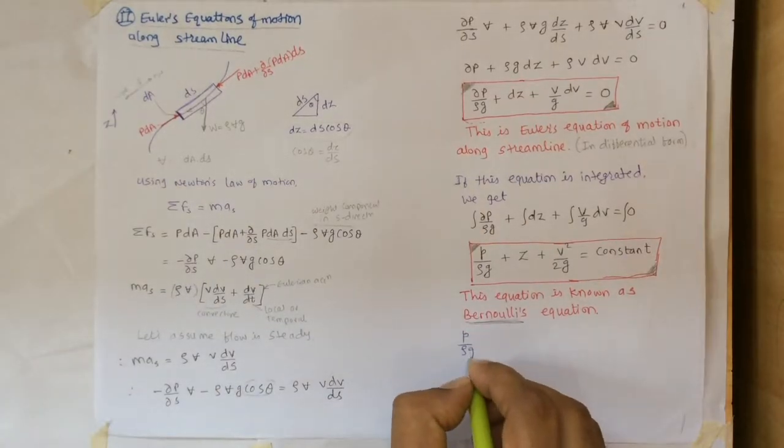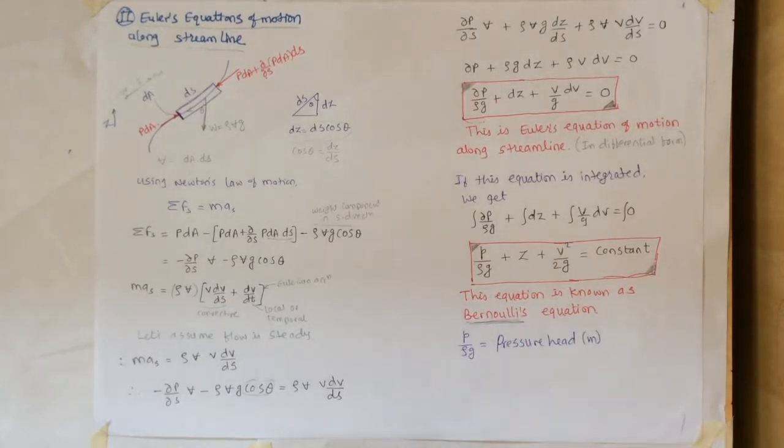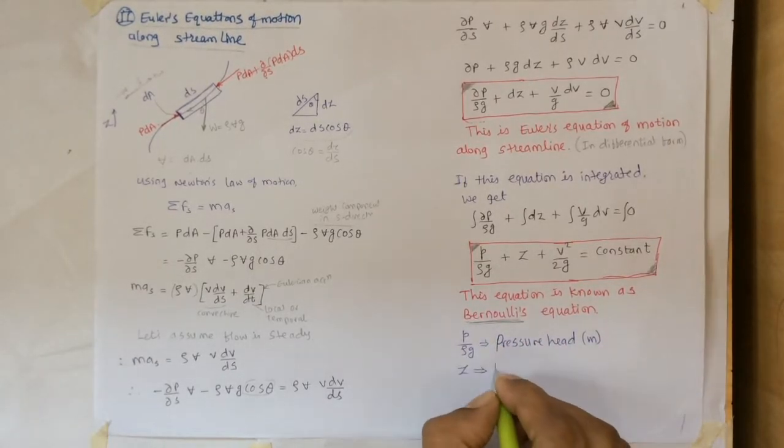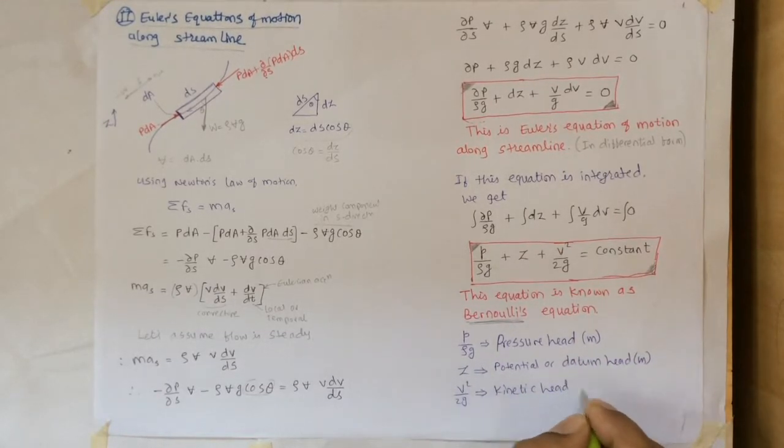So this first term is p/(rho g) which is called as pressure head which is given in the unit of meters. z is potential or datum head which is again in meter. v²/(2g) the third term is kinetic head which is again in meter.